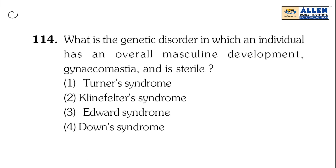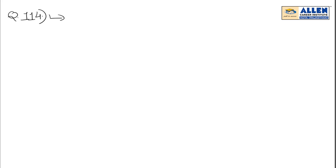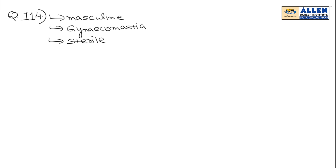We will discuss question number 114. In this question, the information given is that a person is suffering from a genetic disorder, and 3 characters are given. First character: the person is showing masculine characters. Second: the person is showing gynecomastia. And third: the person is sterile.